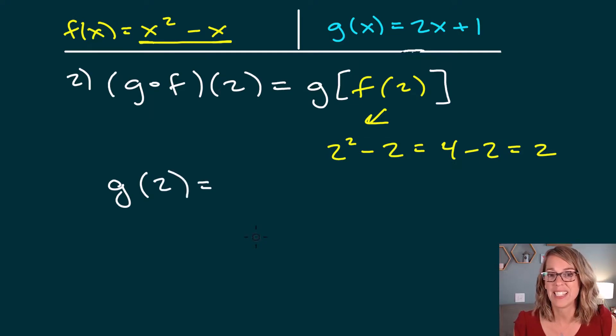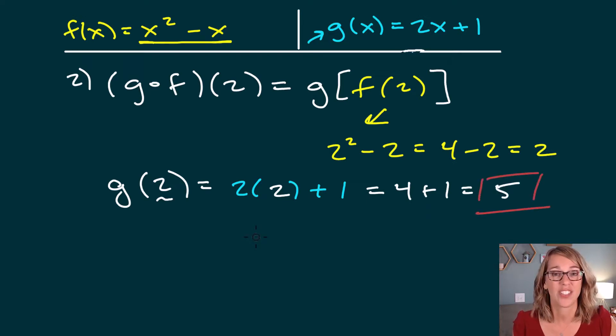And now I'm completely done with my function f. And I can go ahead and apply my function g. g does 2 times the input plus 1. Well, my input this time is that 2. So I end up with 2 times 2 plus 1. That's going to be 4 plus 1 or 5. So our answer for this one is 5. Let's just do one more. Number 3. You are getting this.